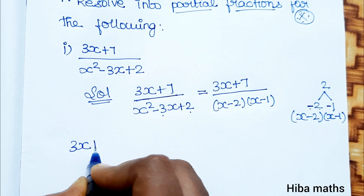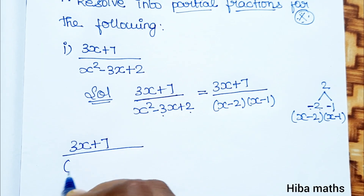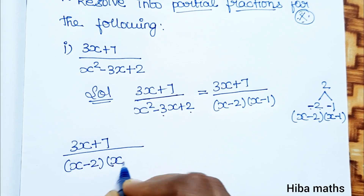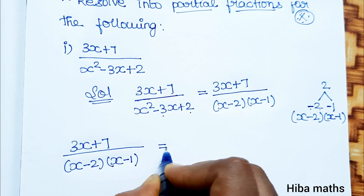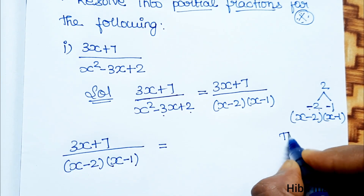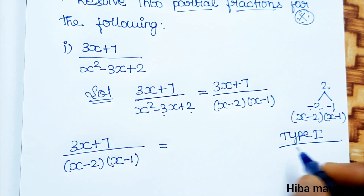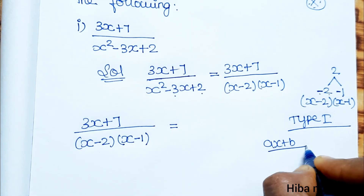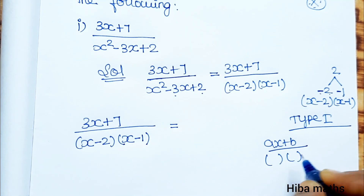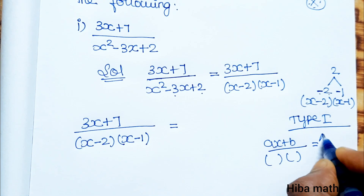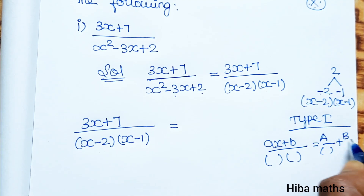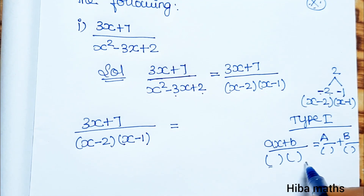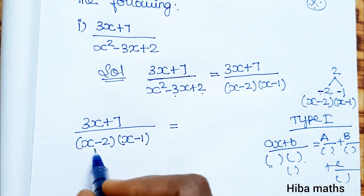The next line is: 3x plus 7 divided by (x minus 2)(x minus 1). For partial fractions, Type 1: if you have a polynomial divided by two factors, you write it as A over the first factor plus B over the second factor. If you have three factors, you add C over the third factor as well.